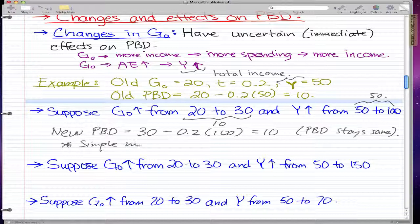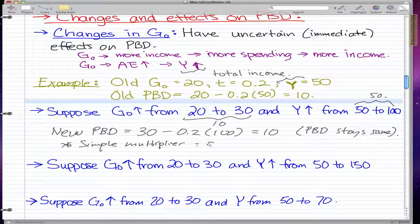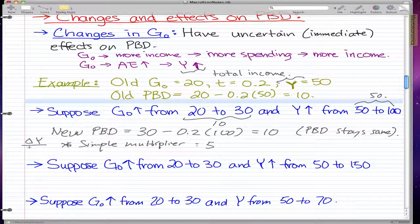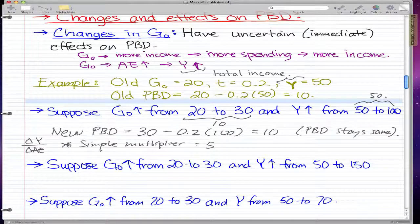A quick note for you: our simple multiplier is 5. The formula for simple multiplier is the change in Y over the change in AE. We don't know anything about our other variables that build up AE, so we just assume that the only change that builds up AE is G0. This is AE0. And G0 changed from 20 to 30, which is 10, so there's a change of 10 for AE.